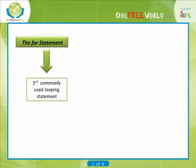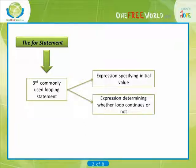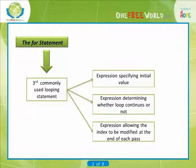The for statement. The for statement is the third and perhaps the most commonly used looping statement in C. This statement includes an expression that specifies an initial value for an index, another expression that determines whether or not the loop is continued, and a third expression that allows the index to be modified at the end of each pass.